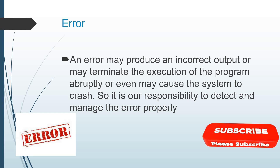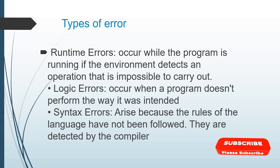What is an error? There are exceptions and there are errors. An error may produce an incorrect output, may terminate the execution of the program abruptly, or may even cause the system to crash. It is our responsibility to detect and manage the error properly. Types of errors: there are runtime errors, logic errors, and syntax errors. Runtime errors occur if the environment detects an operation that is impossible to carry out. Logical errors mean the program doesn't perform the way it was intended to. Syntax errors arise because the rules of the language have not been followed — they are detected by the compiler itself.